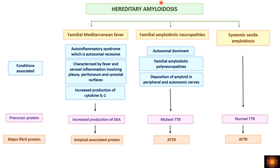In hereditary amyloidosis, the first condition is familial Mediterranean fever — an autoinflammatory, autosomal recessive syndrome characterized by inflammation of serosal surfaces such as the pleura, peritoneum, and synovium. Increased production of cytokine interleukin-1 stimulates hepatocytes to produce serum amyloid associated protein, leading to deposition of amyloid associated protein.